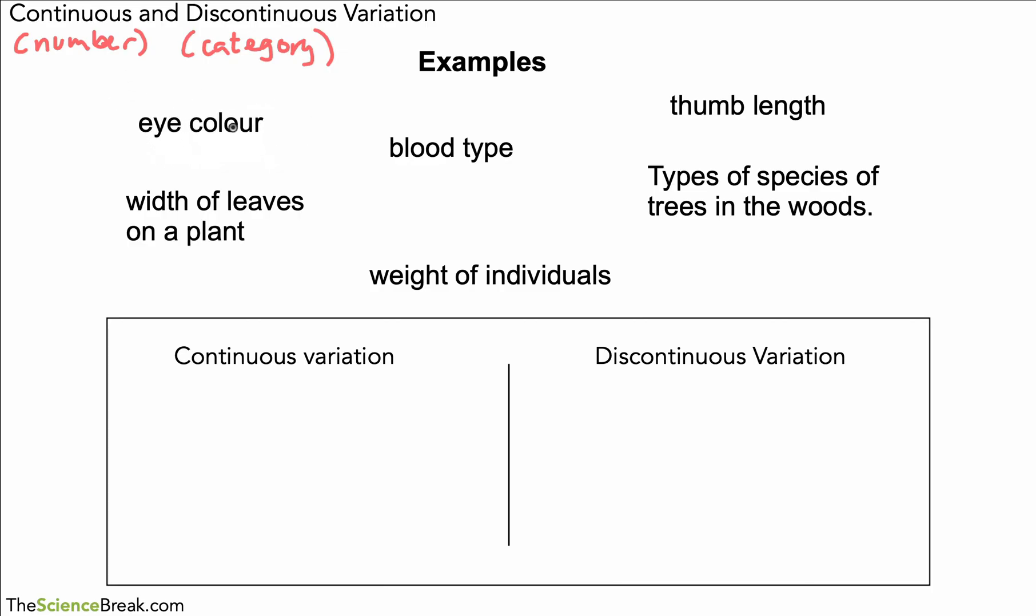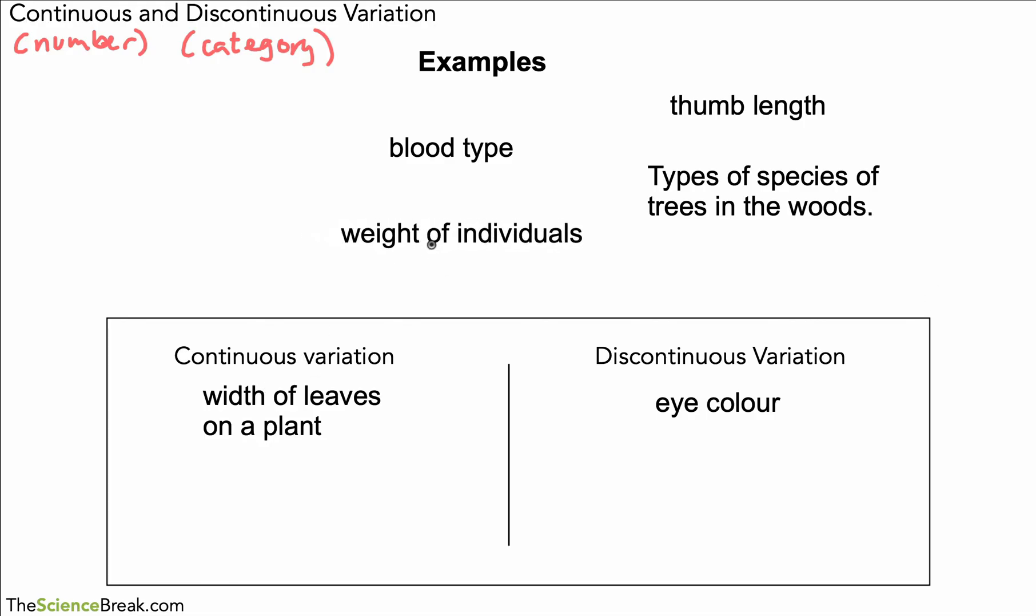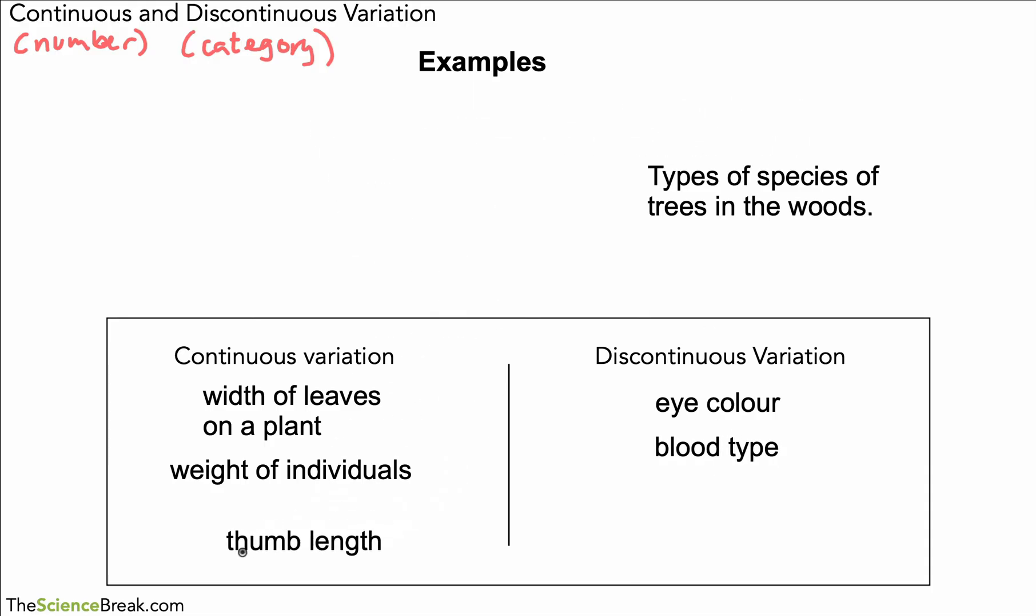Right, so let's start with eye color. Is that a category or is that a number value? We don't give a number value to eye color, you give a color which is a category, so that would be discontinuous. Width of the leaves on a plant—width is measured in millimeters or centimeters in this case, so that would be a number value that goes into continuous. Weight again would be in newtons, so you'd be giving that a number value, so that would be continuous variation. Blood type—for humans, blood type common ones are blood type A, B, O, or AB, and these are categories. They're not given number values, so that would be discontinuous variation.